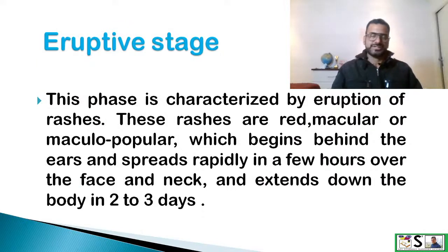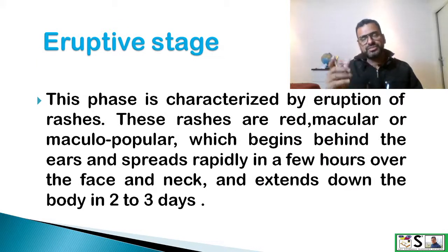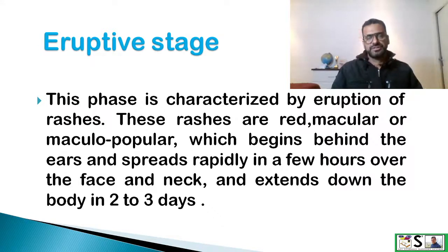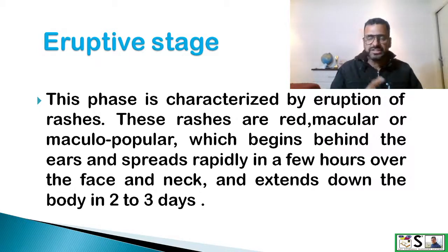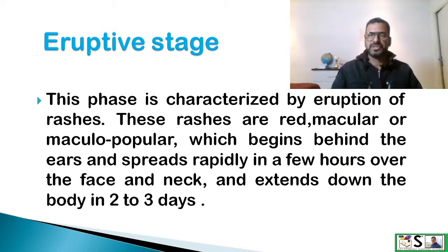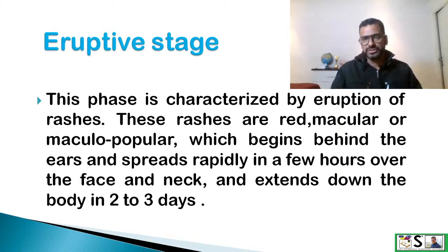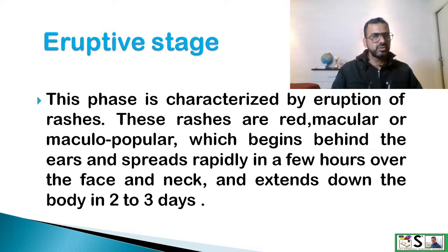In the eruptive stage, which normally starts four days after the pre-eruptive stage, this phase is characterized by the eruption of rashes. These rashes are red macular or maculopapular rashes which begin behind the ears and spread rapidly in a few hours over the face and neck, extending down to the whole body in two to three days.